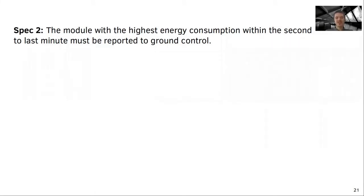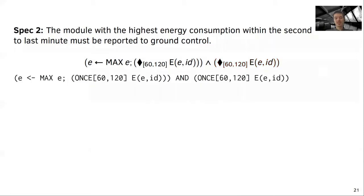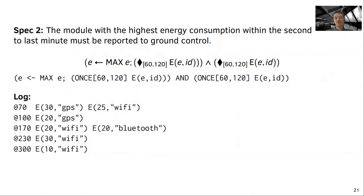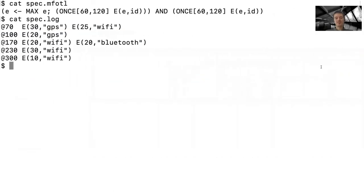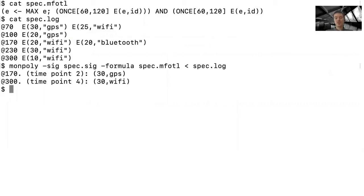Hi, Dimitri. I have prepared some demo for you. I heard that you are interested in aggregations, in particular the following specification. The module with the highest energy consumption within the second to last minute must be reported to ground control. Here is how I formalized it. The first conjunct computes the value of the highest energy consumption of any module, while the second conjunct selects the actual modules exhibiting the highest energy consumption. This is how we write it in Verimon Plus. I am now going to check if the property holds on the following log of events that your robot could have produced. I also need to prepare a signature file describing the predicates in the policy. Finally, we are ready to invoke Verimon Plus. The output shows the modules along with their highest energy consumption. For instance, the first line shows that at timestamp 170, the GPS module exhibited the highest energy consumption between the timestamps 50 to 110, and the value was 30.